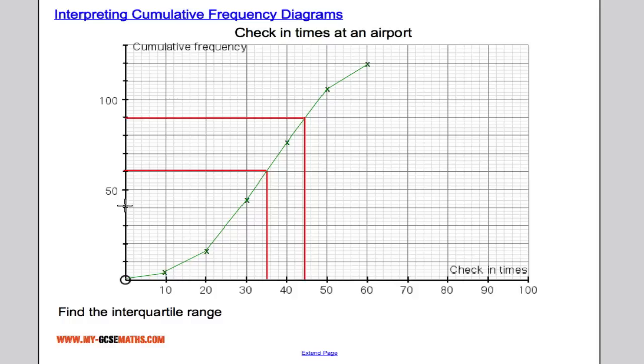The lower quartile is the median of the lower half of the data, which is going to be 30. So 10, 20, 30 here. So again, read across and down.